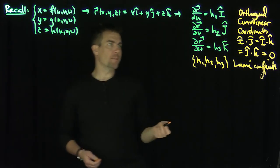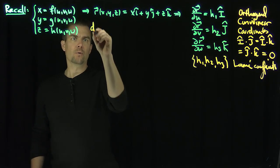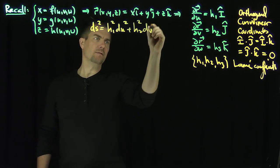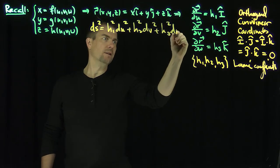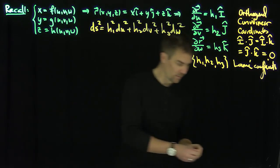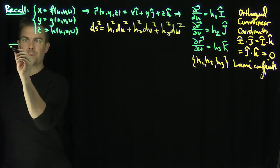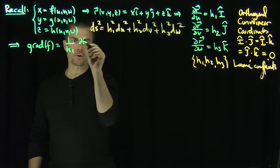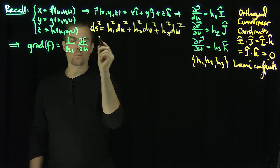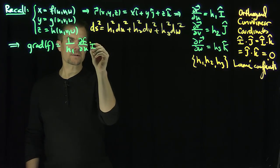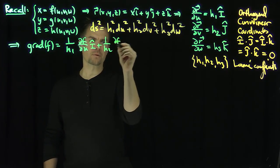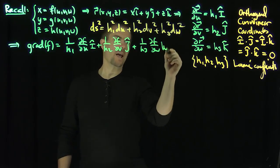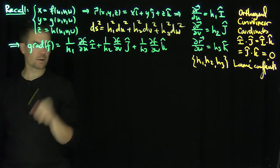In a previous video, we constructed the gradient because the arc length differential ds² equals h1² du² plus h2² dv² plus h3² dw². From this, we were able to see that the gradient of a function f is 1 over h1 times partial f partial u, i-hat, plus 1 over h2 times partial f partial v, j-hat, plus 1 over h3 times partial f partial w, k-hat. That's the definition of the gradient, derived using the arc length differential.